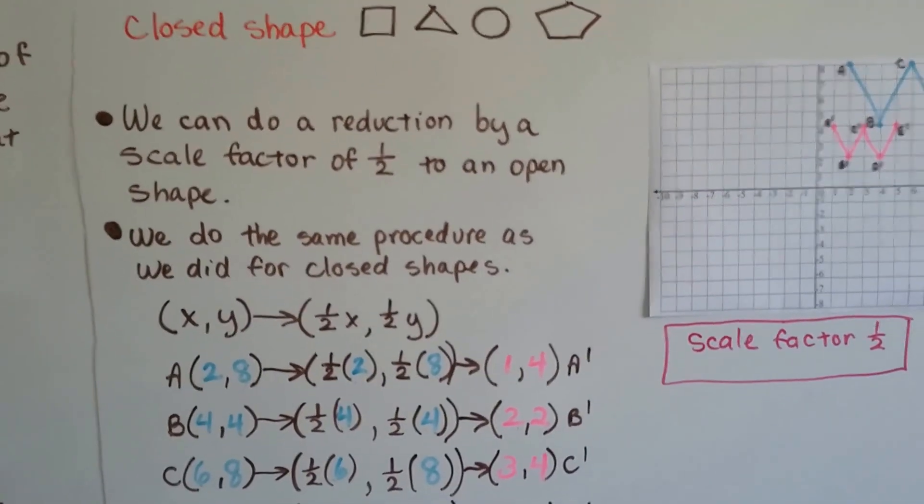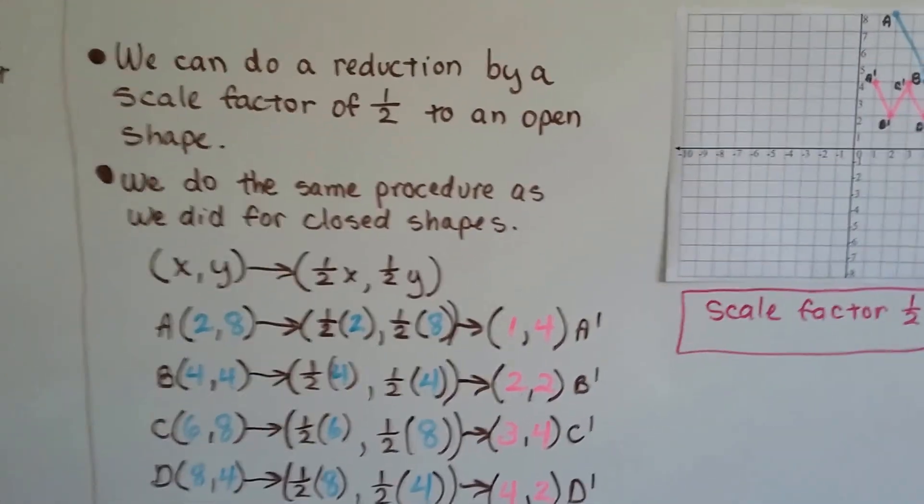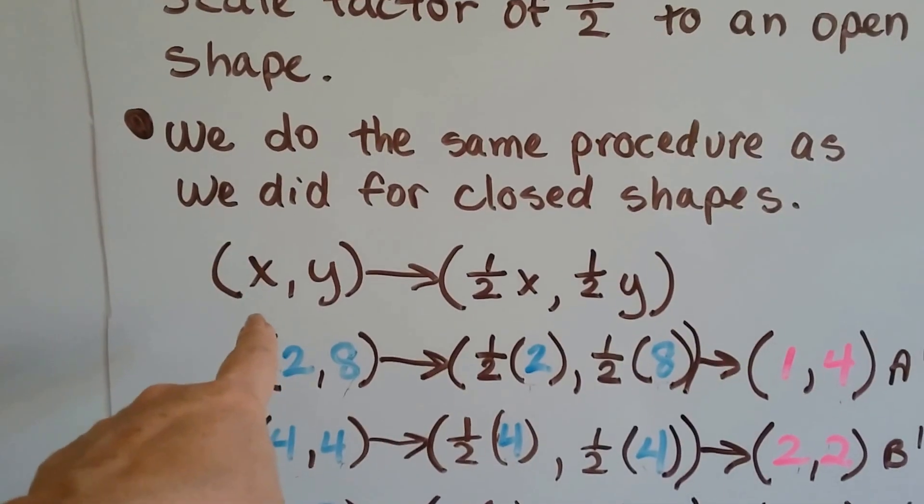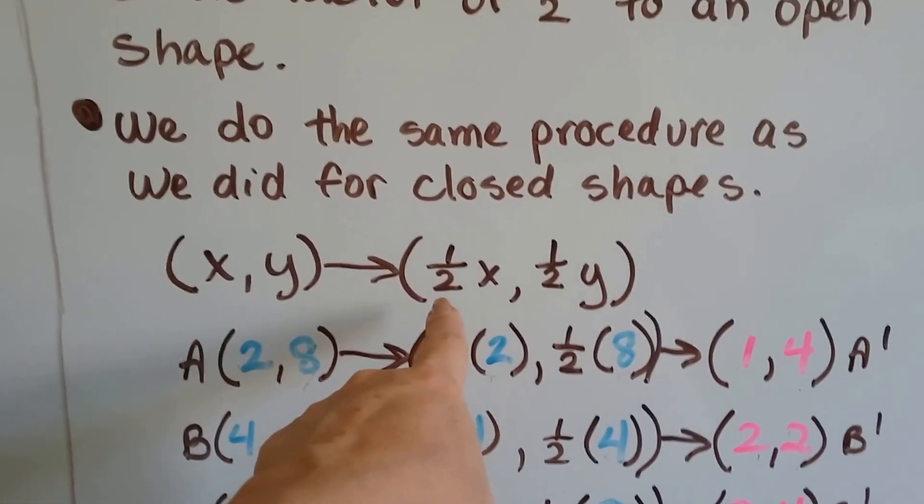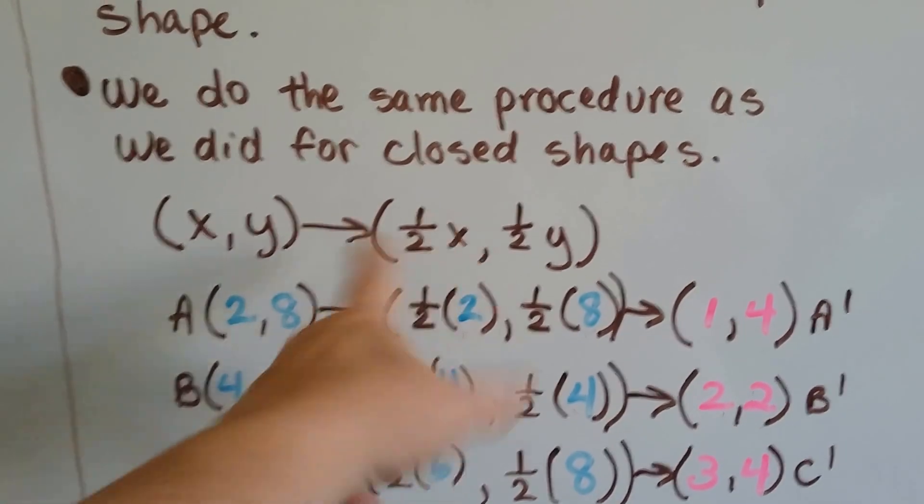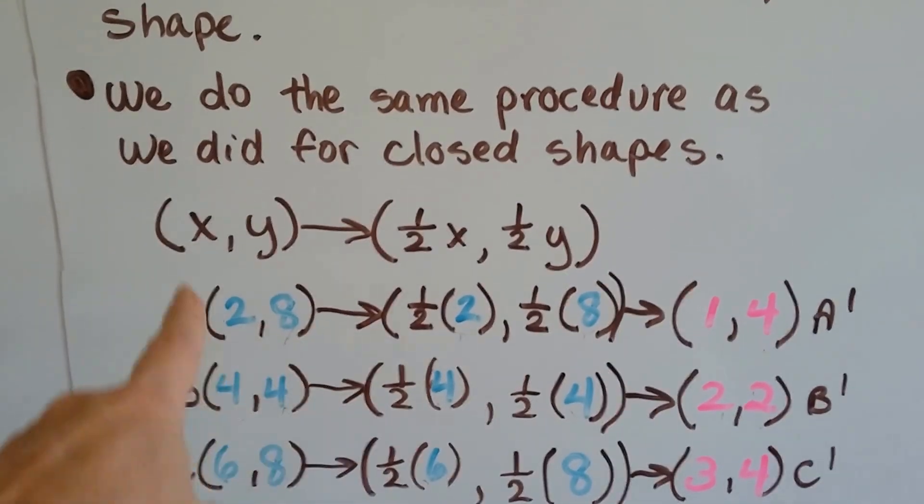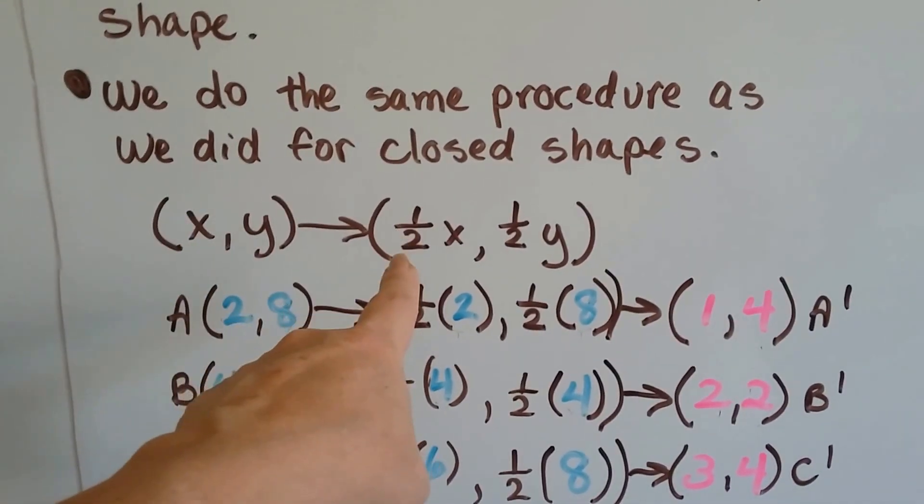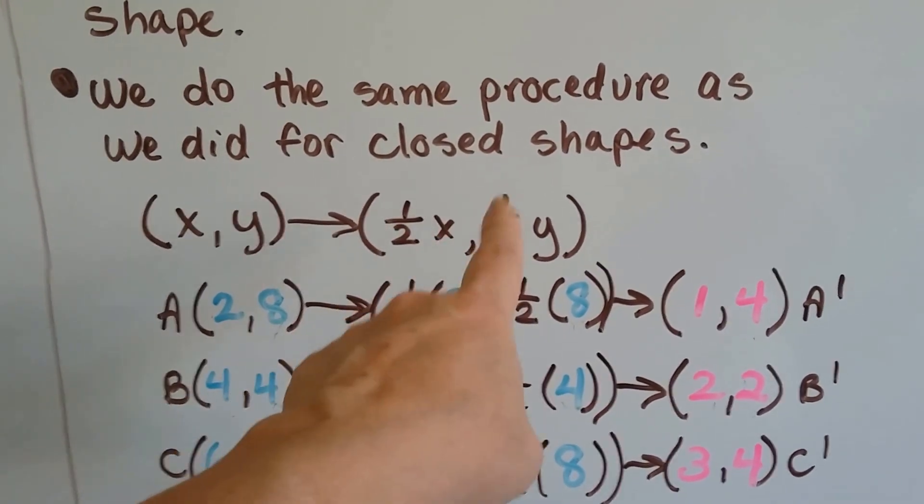We do the same procedure as we did for the closed shapes. We use the same mathematic notation and our scale factor, what normally would have been k here, is now a half because that's our scale factor. They use k to represent whatever the scale factor is. So, we've got x and y are going to be multiplied by a half for x and a half for y.